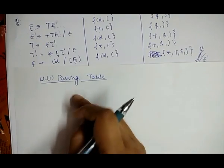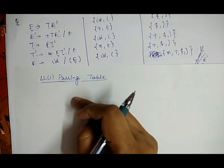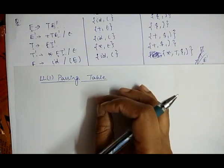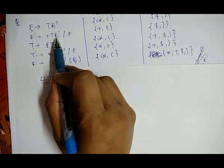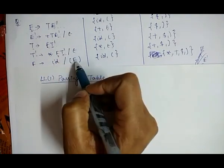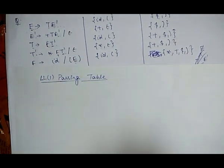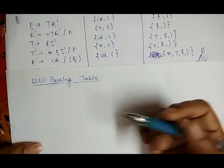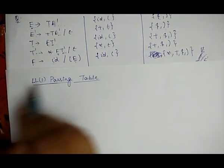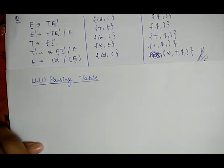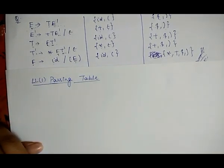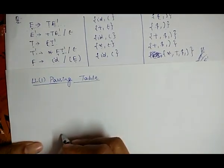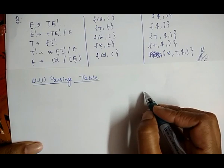We create this table to determine which production to choose for a particular variable when there are two or more choices. To avoid confusion in selecting a particular production, we create a parsing table called the LL1 parsing table. In this table, the rows represent the non-terminals and the columns represent the terminals.